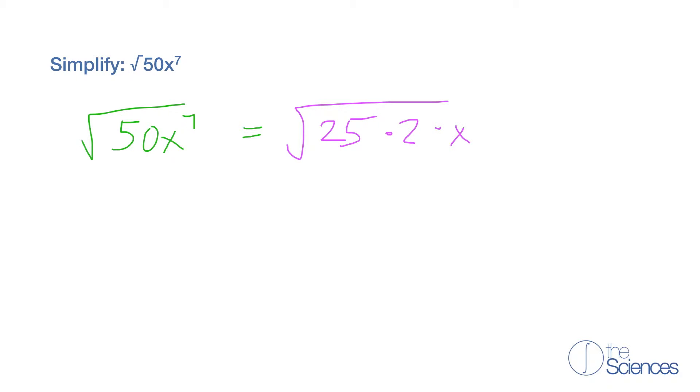So we also have our x to the 7th power. Now we could break down our x to the 7th power into an even number that's a perfect square. So we could break it down into 25 times 2 times x to the 6 times x.